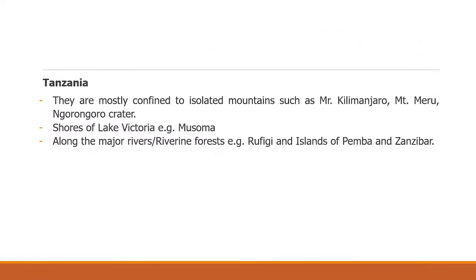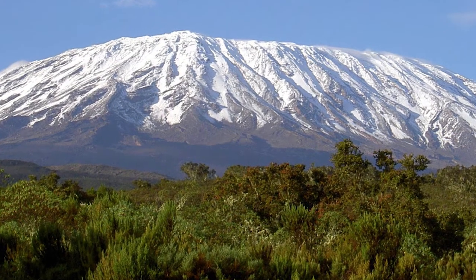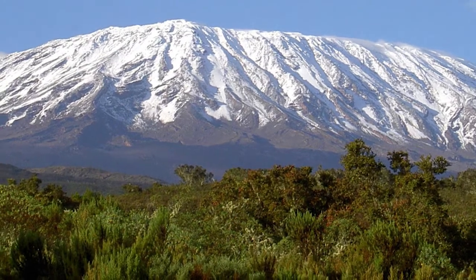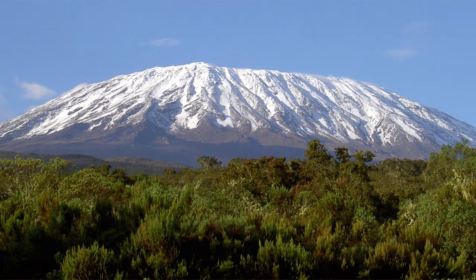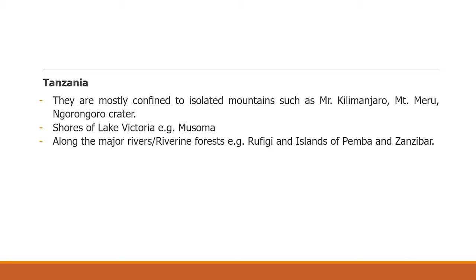In Tanzania, tropical rainforests are mostly confined to isolated mountains such as Mount Kilimanjaro, Mount Meru, and Mount Ngorongoro. They are also found along the shores of Lake Victoria — for example, Musoma — along major rivers, and on the islands of Pemba and Zanzibar.